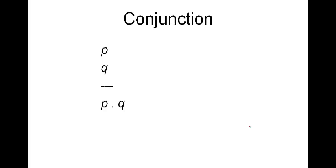The rule of conjunction: if you have p on a line by itself and q on a line by itself, then you can conclude 'p and q'. You might need that for some purposes in proofs.